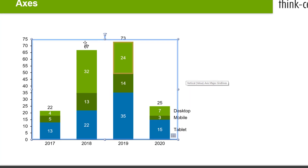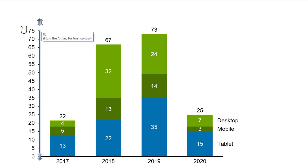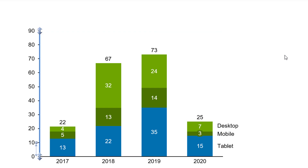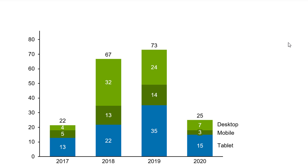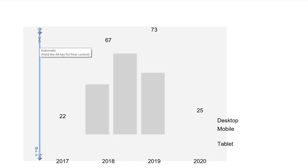To manually scale a value axis, select it with your mouse and drag one of the handles at either end. Release when you are happy with the extension of the scale. The values on the axis must always include the range between the lowest and highest values in the chart. Holding down Alt while dragging allows you to end the axis between tick marks. To restore automatic scaling, drag the handle until the tooltip reads Automatic and release.